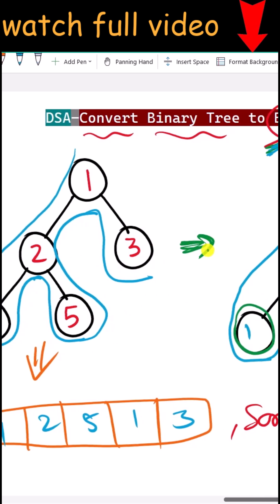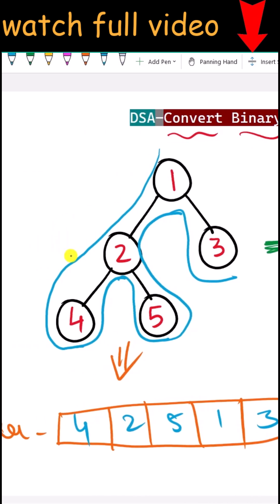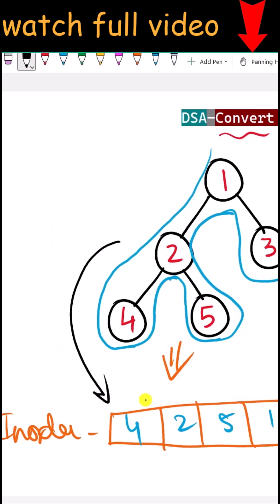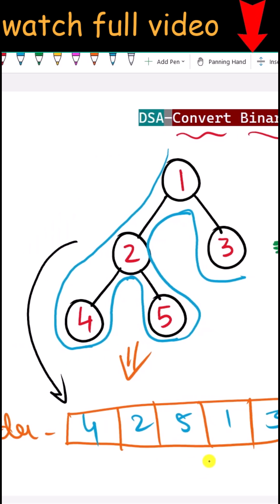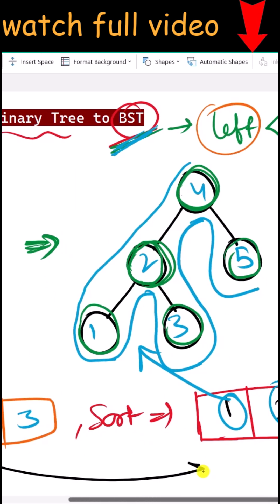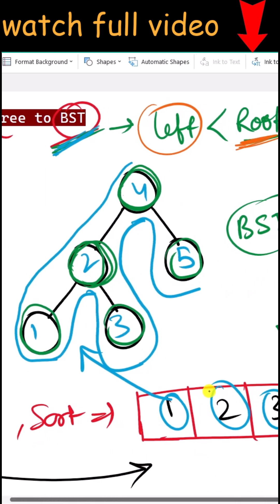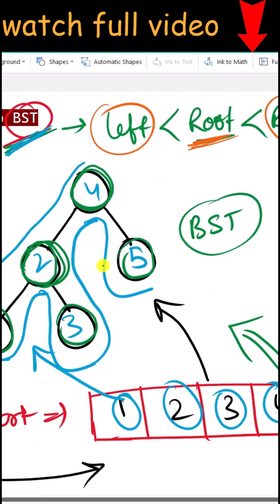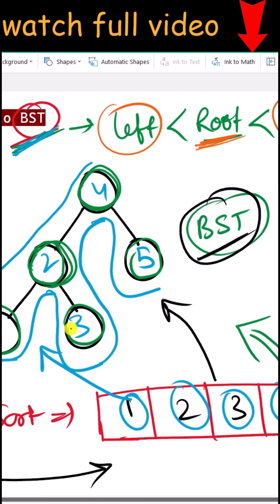To summarize, we follow three simple steps: first perform the in-order traversal of the original tree, then sort those values, and finally insert them back into the tree using in-order traversal. Hope you understood the concept — see you in the next one, take care.